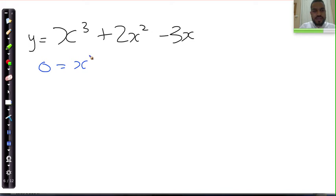So 0 = x³ + 2x² - 3x. I equate y equal to 0. And now I see that there's a common factor and the highest common factor that can go into any of these is x.